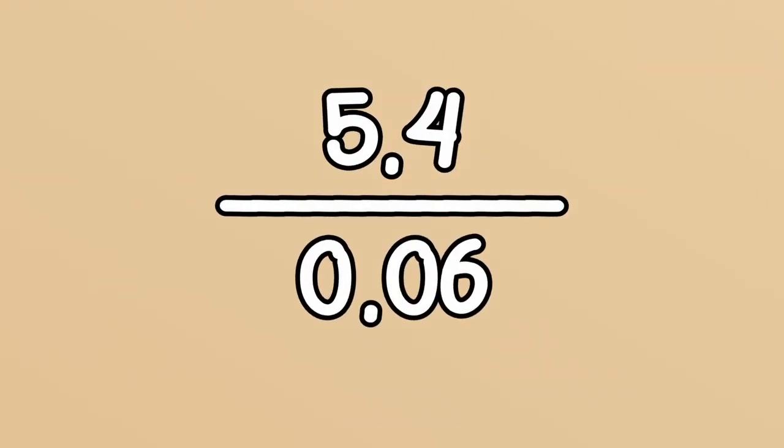Now let's look at dividing decimals. The number that we divide by is called the divisor. This needs to be a whole number. It doesn't matter what the other number is, as long as our divisor is the whole number. So let's look at an example. If I've got 5.4 divided by 0.06. The number that I'm dividing by, 0.06, is my divisor.